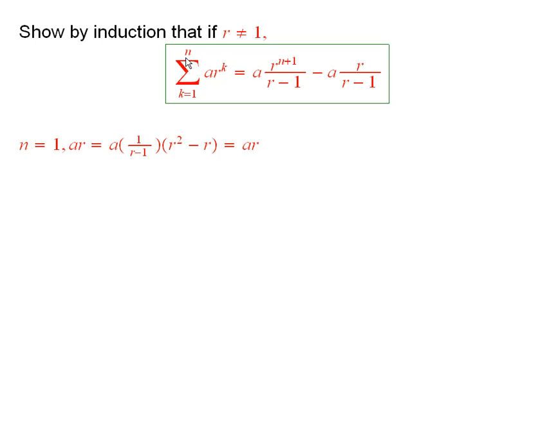If you plug in n equals 1 on the left, you just get a times r. If you plug in n equals 1 on the right, you get a over r minus 1. I factored the a over r minus 1 out, times r squared minus 1.